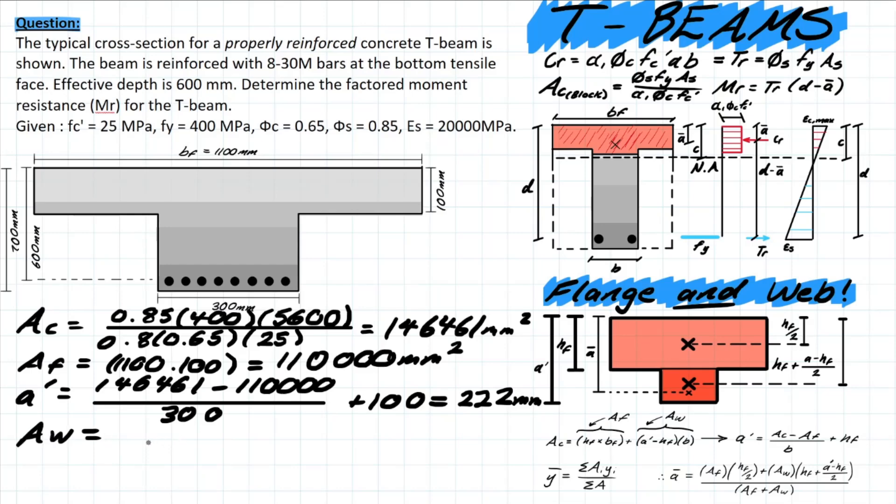Let's take a look at the formulas here. We have Aw which is going to be 222 minus 100, so that's a' minus the height of your flange, and then we have the width of your web which is 300. This leaves you with 36,300 millimeters squared. And then you're simply plugging into this formula to get your ā value, which is where that centroid is located for your composite.